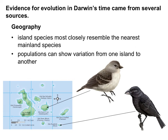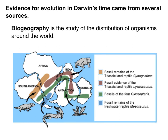There is also geographical evidence for evolution — specifically that island species most closely resemble the nearest mainland species. Populations can show variation from one island to another, but they're going to be more closely related to organisms that are closer to them. Biogeography is the study of living or previously living organisms around the Earth. We can see fossil remains of similar organisms in closely related areas, or even the same organism spread over areas that may not be connected anymore — like Pangaea, the supercontinent. There's evidence Pangaea probably did exist because we have fossil evidence of similar species found on continents that would have been connected if Pangaea existed.